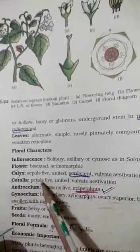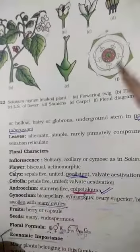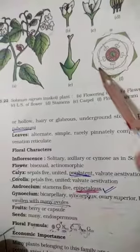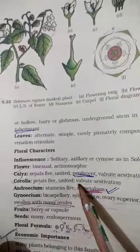Now it comes to the corolla. Petals are five. One, two, three, four, five petals you can see. This bracket shows gamopetalous condition is there.